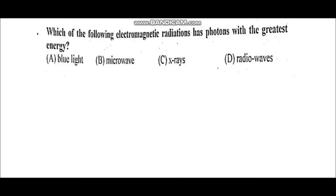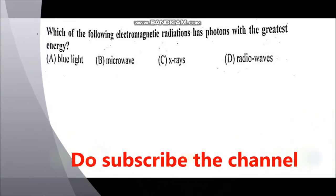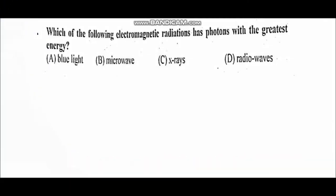Question number one: which of the following electromagnetic radiations has photons with the greatest energy? To answer this, we look at the electromagnetic spectrum in order of increasing energy: gamma rays, then X-rays, then ultraviolet, visible rays, then infrared, microwaves, and radio waves. Gamma rays are the most energetic. Since blue light falls in the visible region, X-rays are the most energetic among the four options. The correct answer is C, X-rays.